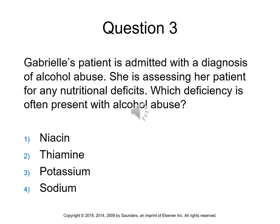Question 3: Gabrielle's patient is admitted with a diagnosis of alcohol abuse. She is assessing for nutritional deficits. Which deficiency is often present with alcohol abuse? The answer is 2 — thiamine. Thiamine deficiency is often present with alcohol abuse. Medical treatment often includes a diet high in calories and carbohydrates, fluid and electrolyte supplements, and vitamin and mineral supplements, especially thiamine.